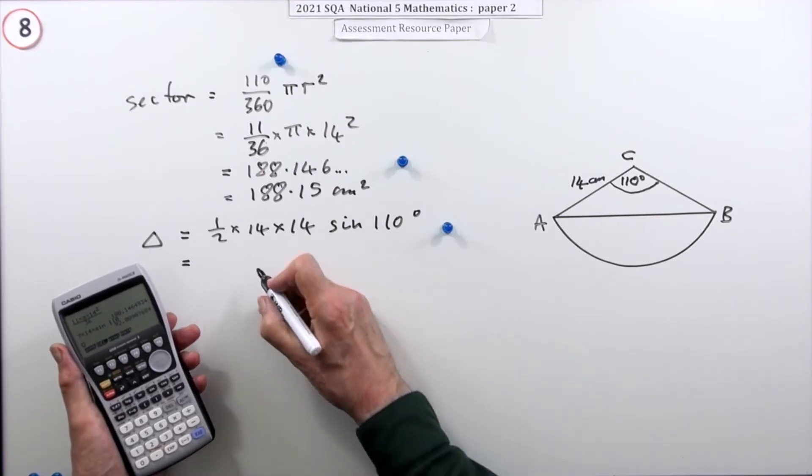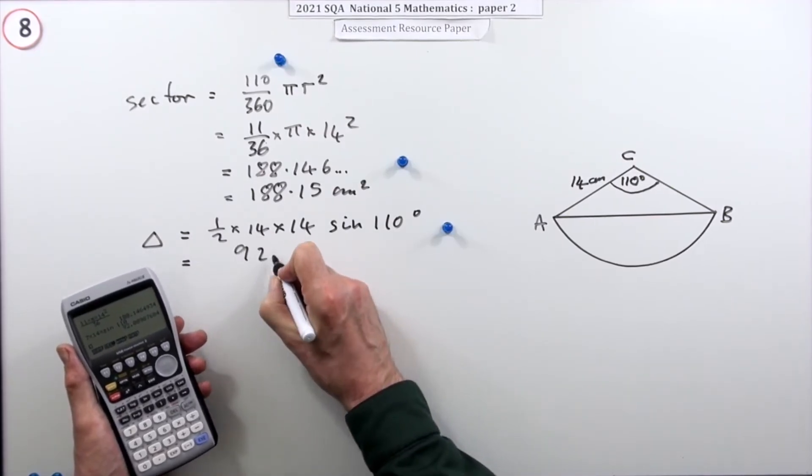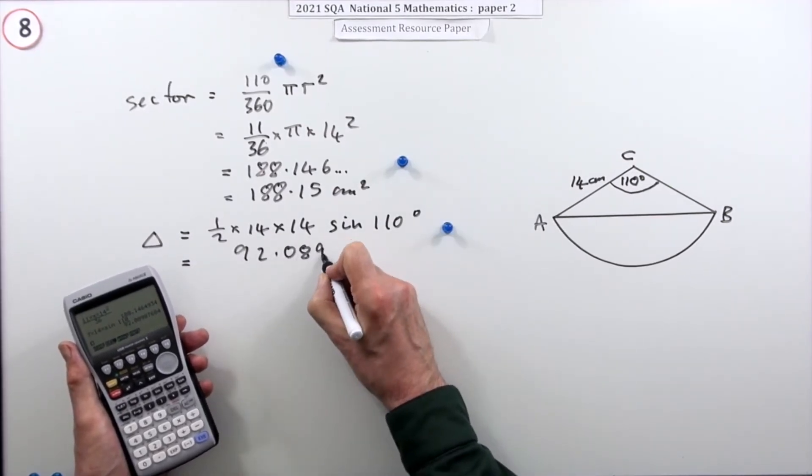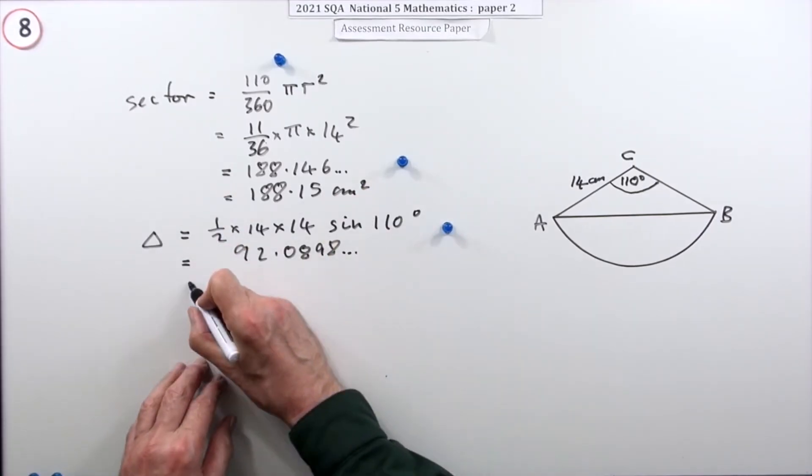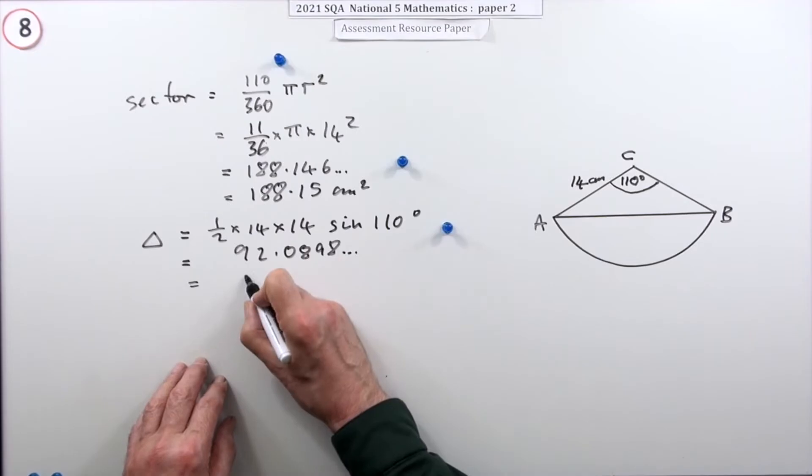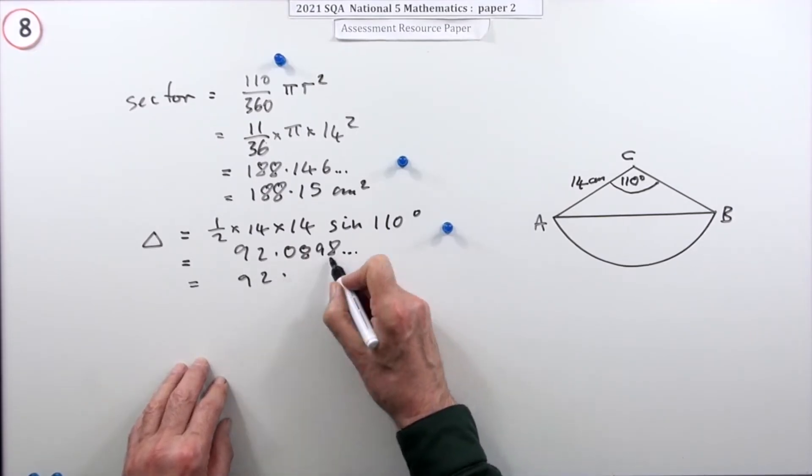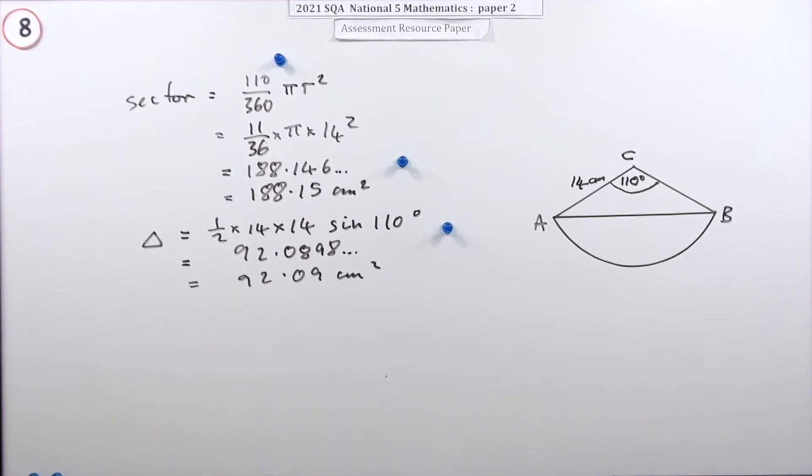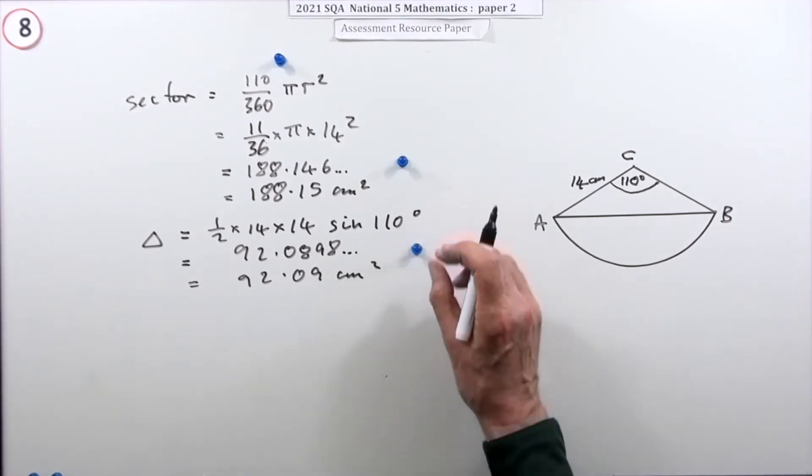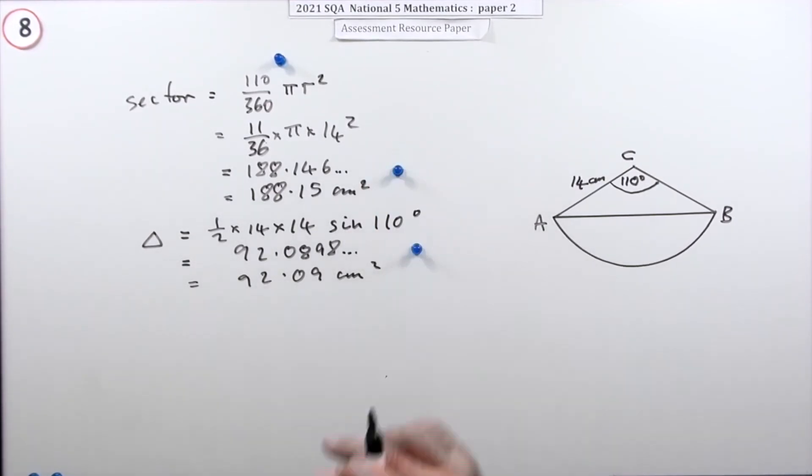Typing that in gives you 92.0898 and so on. I've already rounded that off, so I might as well round this off the same - 92.09 centimeters squared. Those marks are shared between that and the partial answers.